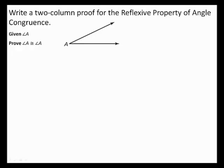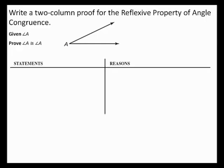Write a two column proof for the reflexive property of angle congruence. Given angle A, prove angle A is congruent to angle A. To begin this two column proof, first start with the given information. You are given an angle named angle A.